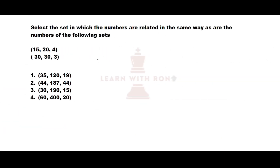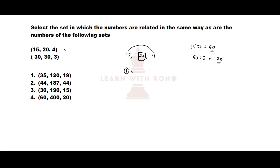Let us see our next question. See the first set here: 15, 20 and 4. If I multiply the first number and the third number, 15 into 4, I get 60. If I divide 60 by 3, I get 20, which is the second number. So the pattern is: first number multiplied by third number, divided by 3, gives the second number.